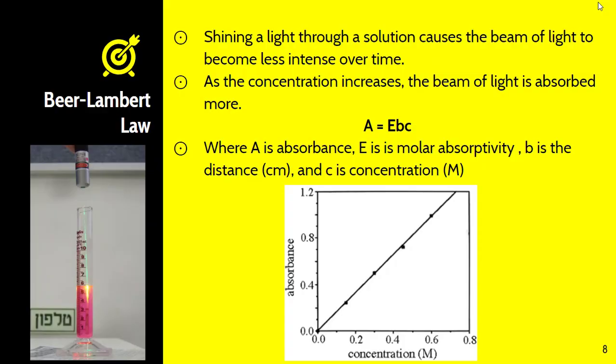The last methodology we're going to look at involves the Beer-Lambert law. Keep in mind that shining a light through a solution causes the beam of light to become less intense over time. This is directly correlated to the concentration. If the concentration of the solution is high, then more of the light is going to be deflected and less will be able to be seen. In this case, we use a Spec 20 to figure this out. We'll actually use these in class.